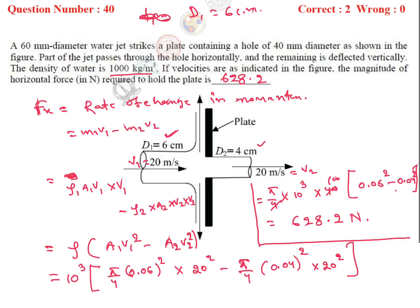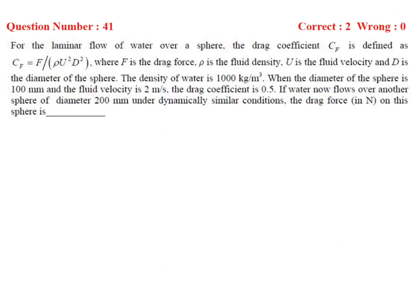Next question: the drag coefficient C_F is defined as C_F = F / (ρ u² d²). Density of water is 1000 kg/m³, sphere diameter D1 = 100 mm, fluid velocity V1 = 2 m/s, and drag coefficient C_F1 = 0.5. Water flows over another sphere of diameter D2 = 200 mm under dynamically similar conditions. We need to find the drag force on this second sphere.